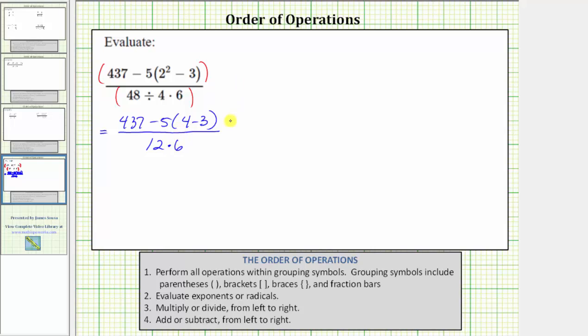And now going back up to the numerator, we are still simplifying within the parentheses. Notice four minus three is equal to one. The numerator simplifies to 437 minus five times one. In the denominator, we have 12 times six, which equals 72.